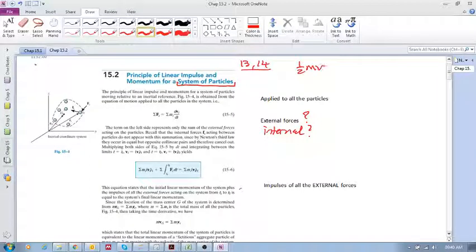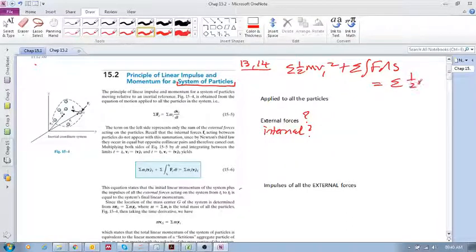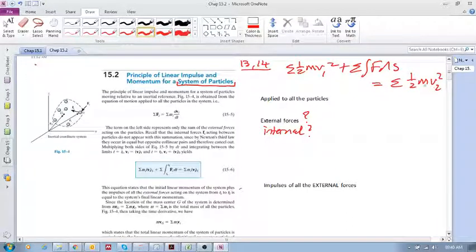We had half mv1 squared. Say now, we were also looking at a system. So it's the sum of all the kinetic energies of all the particles, plus the sum of all the work done, equals the sum of all the kinetic energies of all the particles at 2.